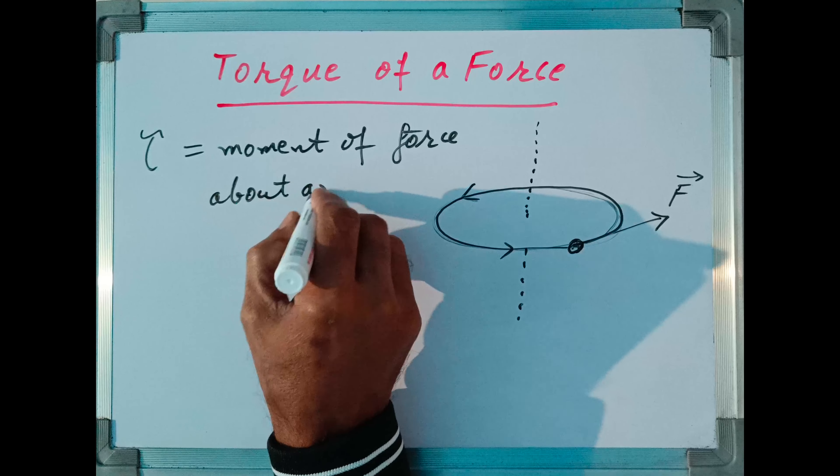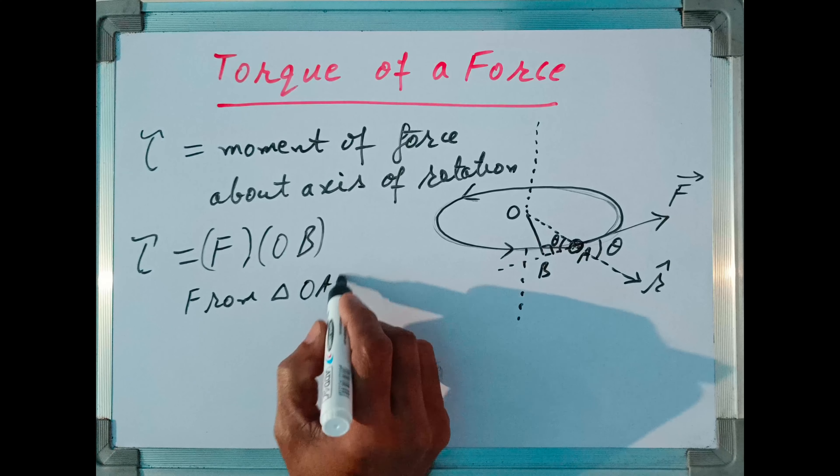Moment means you will produce this line of force backward and drop a perpendicular on this. Suppose this point is O. This point is A where the body is placed. This point is B. Let me join point O and A also. Then this distance, when multiplied by magnitude of force, gives us moment of force about this axis of rotation.